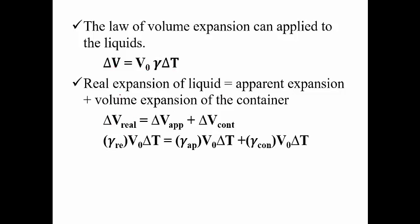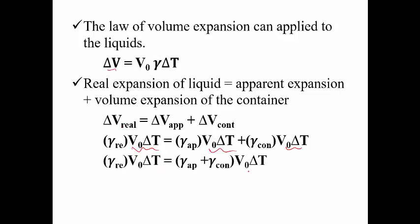For ΔV real: ΔV real = V₀ × γ_real × ΔT, and ΔV apparent = V₀ × γ_apparent × ΔT, and ΔV container = V₀ × γ_container × ΔT. If you take a common factor V₀ ΔT and divide both sides by V₀ ΔT, you get that γ_real is equivalent to γ_apparent plus γ_container.